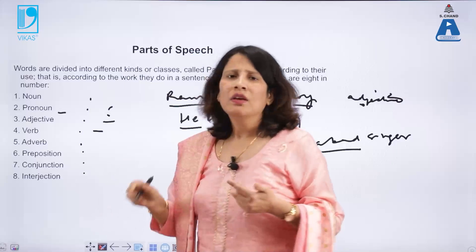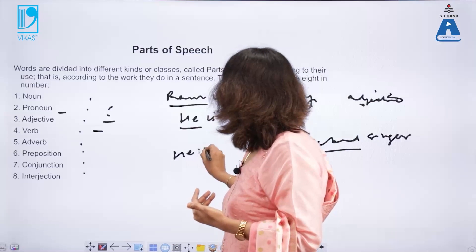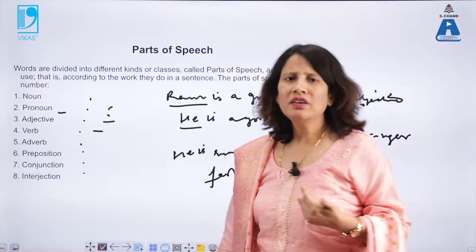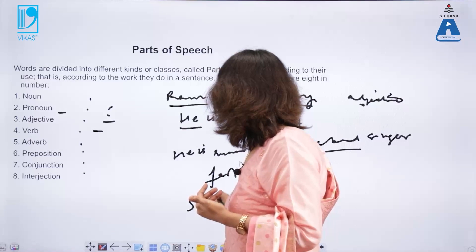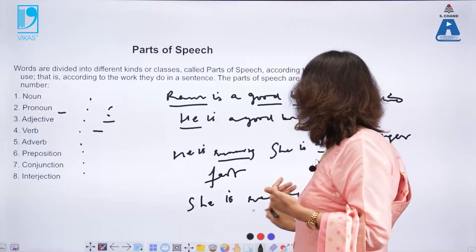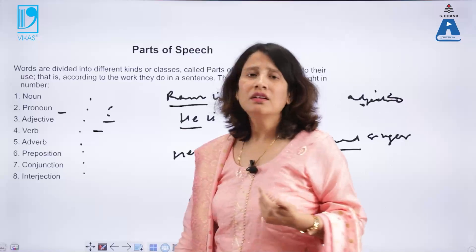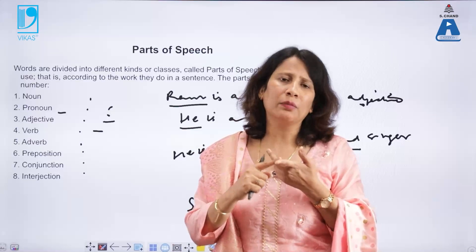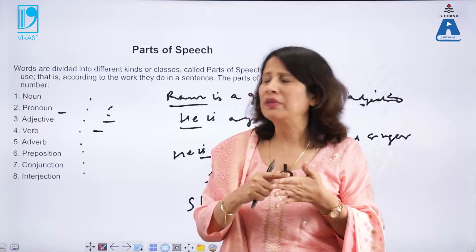A verb is anything which shows action in a sentence. For example, in 'He is running fast' and 'She is reading,' 'running' and 'reading' are verbs — they both show action. 'Is' is an auxiliary or helping verb. We have two kinds of verbs: the main verb, which shows action, and the helping verb, which helps the main verb complete the action.